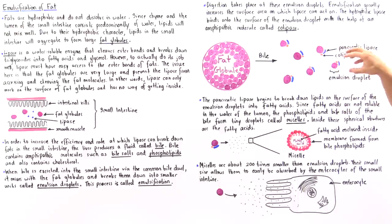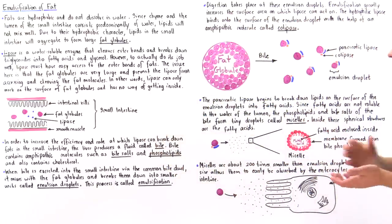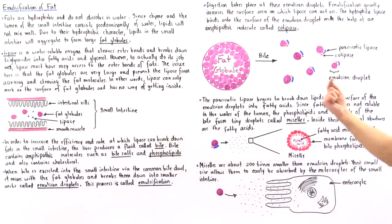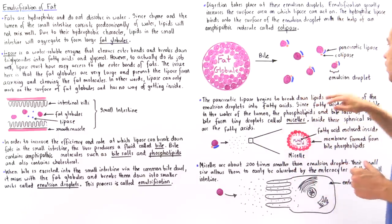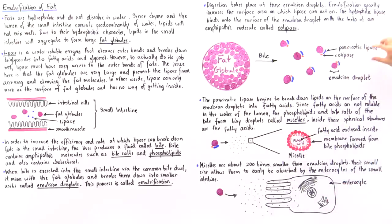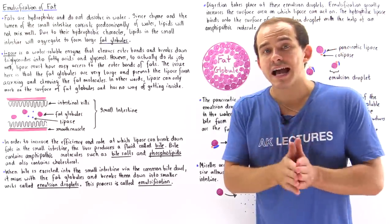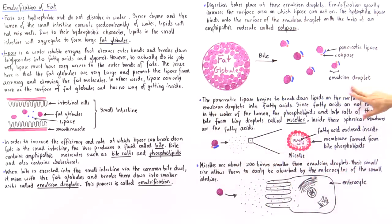Inside these emulsion droplets, we still have many triglyceride molecules that need to be broken down. But now the surface area is greatly increased and pancreatic lipase molecules can attach onto the surface of these emulsion droplets. Since the emulsion droplets are hydrophobic and pancreatic lipase is hydrophilic, how exactly does the lipase bind onto the surface?